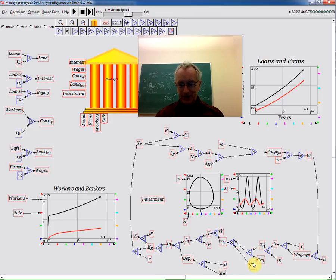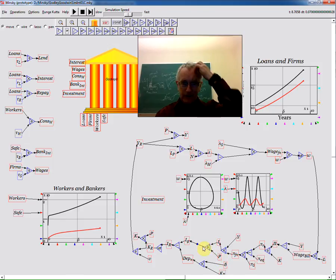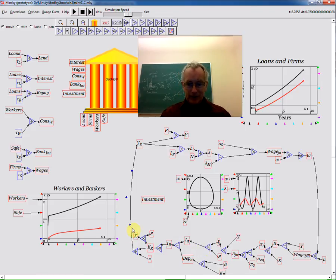Okay. So there's our profit function. Now what I want to do is have the gap between monetary investment and monetary profits as determining what level of investment is. If the desire to invest exceeds retained earnings, then firms go into debt to finance it. If the desire to invest is less than retained earnings, then firms pay off their debts.